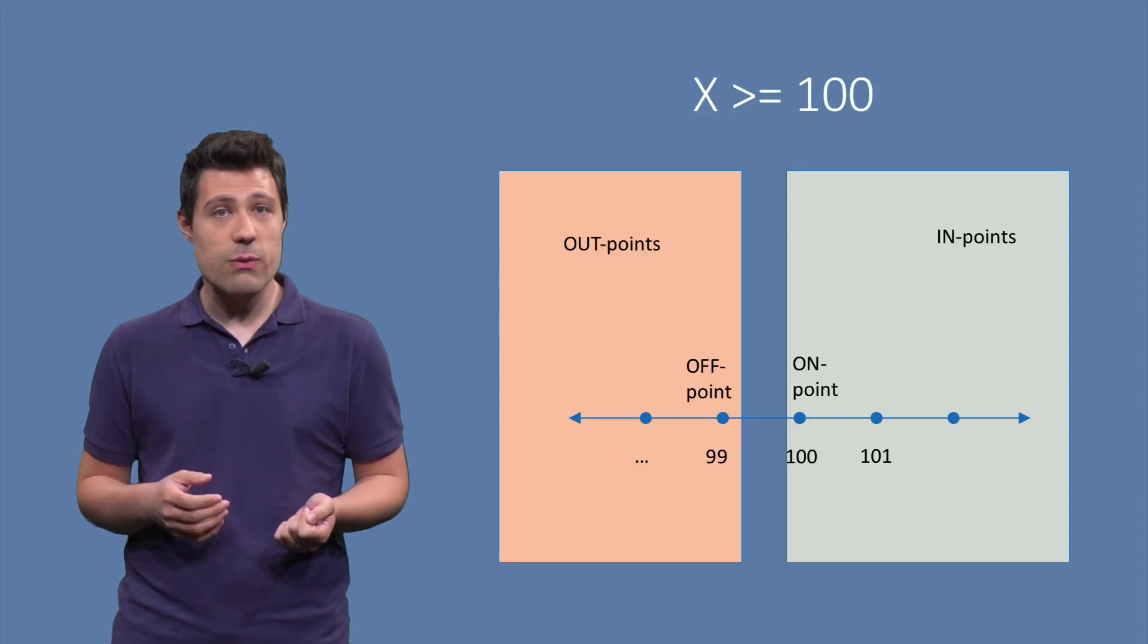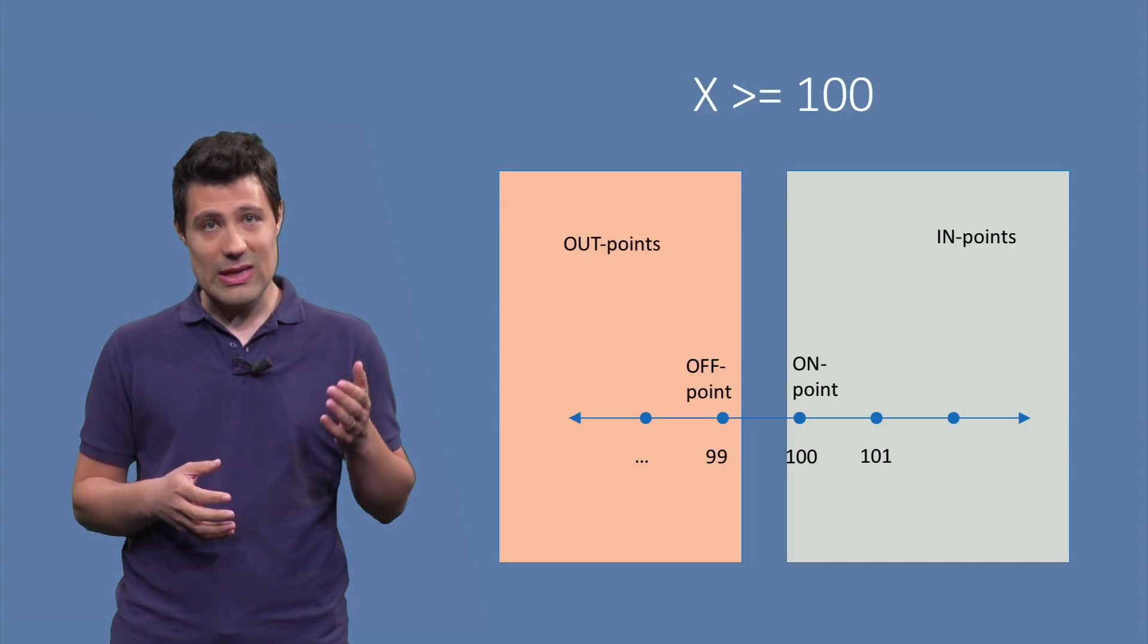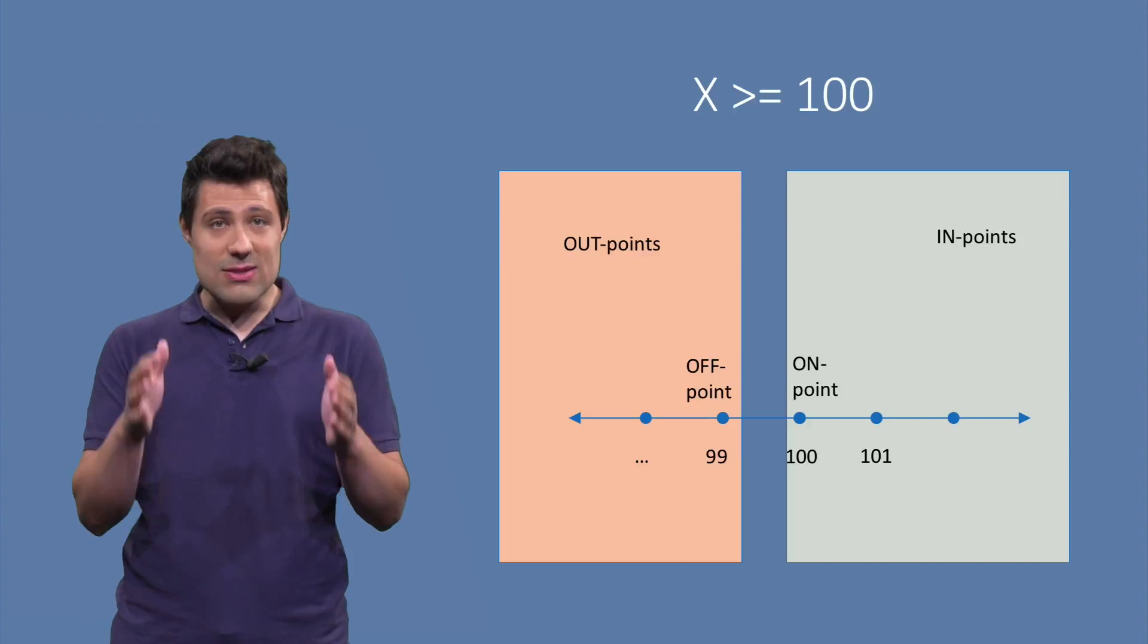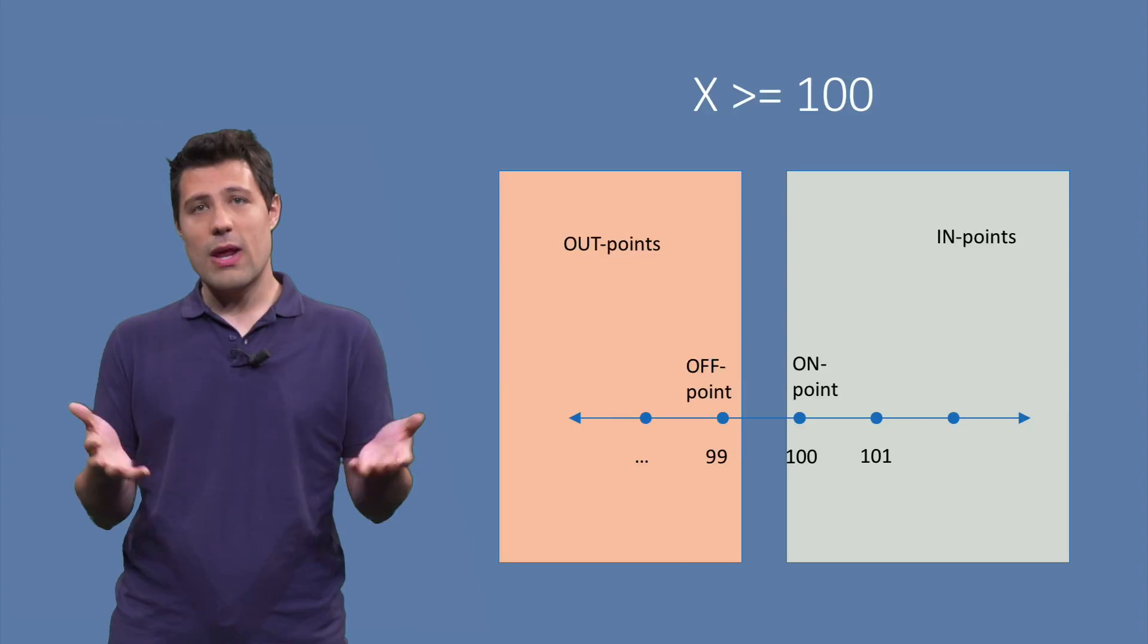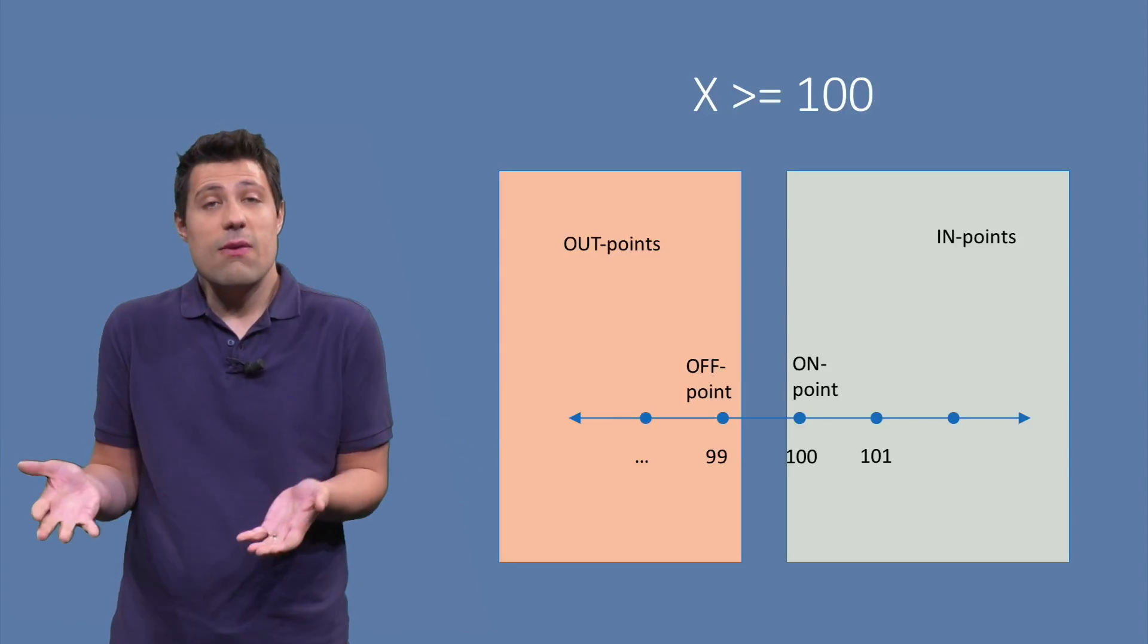Let's do it together with some new terminology. What happens to our system if the input is in the on point? The on point is the number that is exactly on the boundary. In this case, the on point is 100. So what happens to our system if x is 100? Does it behave correctly?